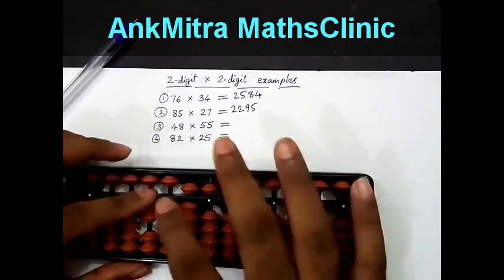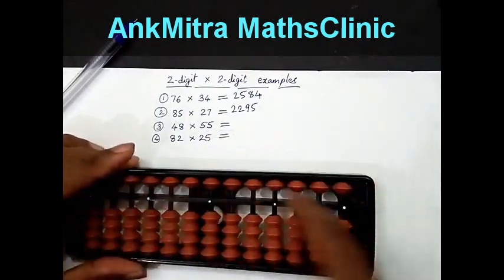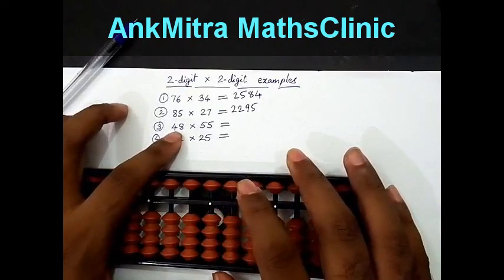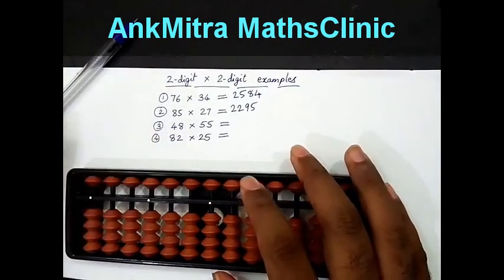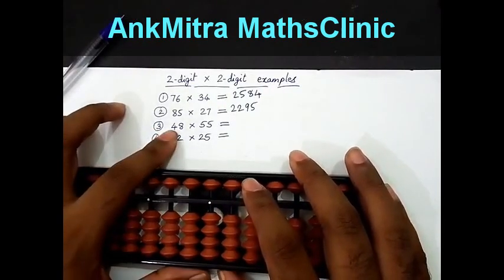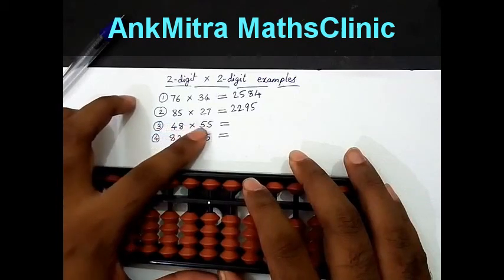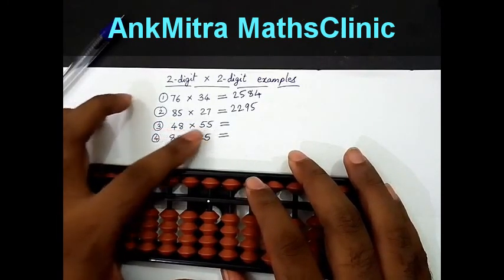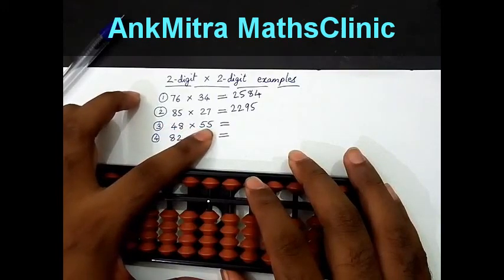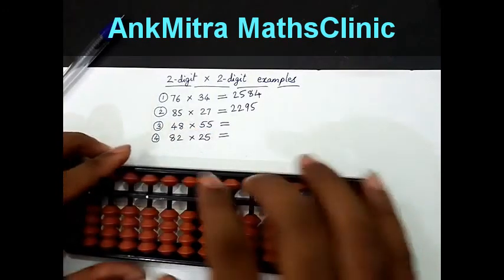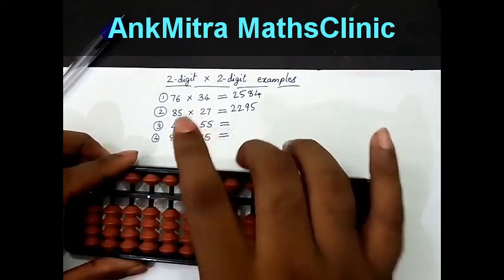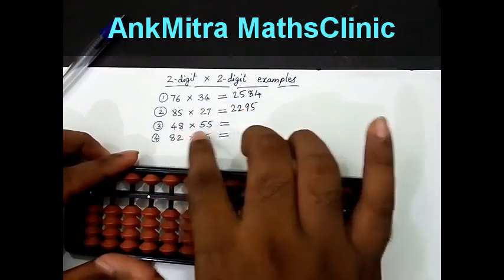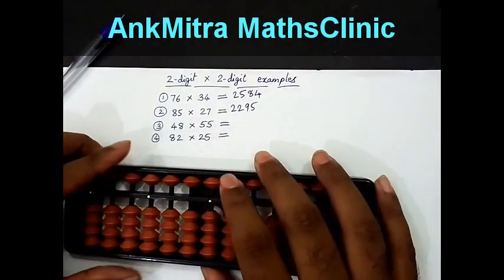Now let us move to the next example. In this sum, I will take 48 entirely. I will show you why I have taken 48 in this case. 48 multiplied by 5 will be the same in both the cases since it is the digit 5 for both places, units place as well as the tens place. I will take 48 multiplied by 5 calculated mentally once. 48 into 5 is 240.